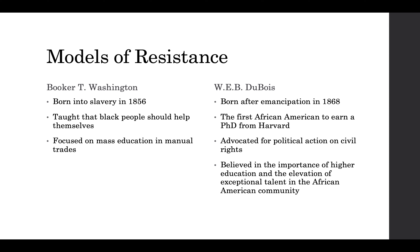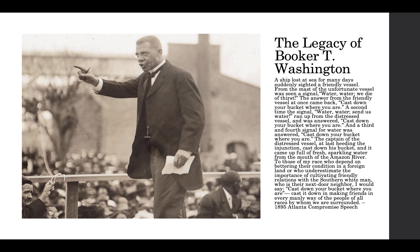Du Bois, on the other hand, thought that the laws actually needed to change first—that white people would never accept Black people as equals until their equality was enshrined in the law and in their political institutions. The speech that the narrator gives at the end of the Battle Royale in chapter one references a famous Booker T. Washington speech from 1895 known as the Atlanta Compromise.